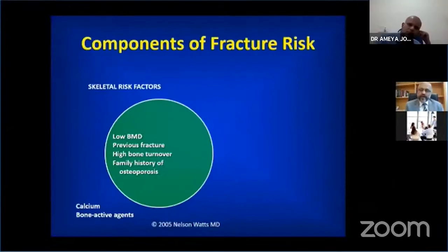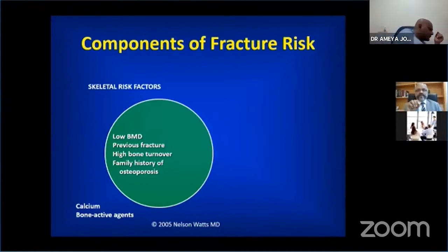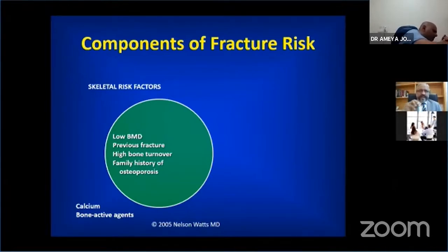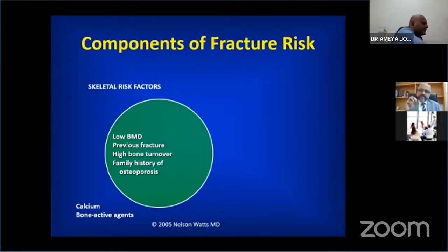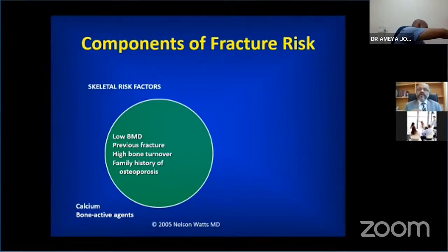Let's now look at the components of fracture risk. Osteoporosis, while it is diagnosed by demonstrating a low bone density, is not exactly synonymous, because ultimately we are trying to look at things that will determine fracture risk — factors that will influence fracture risk. While bone density remains the most important factor and the best predictor, fracture risk is not only bone density dependent. So there are non-BMD risk factors also, which are very important.